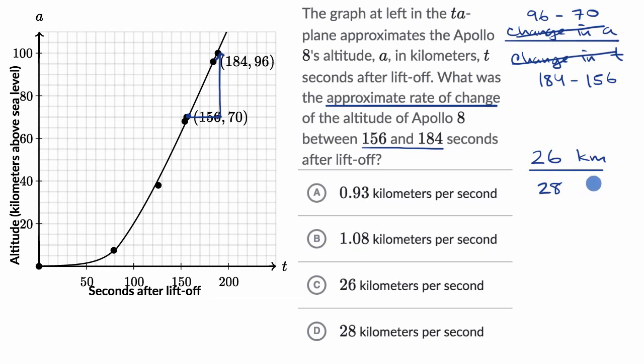Over 28 seconds. Now, we could rewrite this as 26 over 28 kilometers per second. And we could try to calculate this, but this is multiple choice. So we could really try to approximate which of these choices is 26 over 28. Well, we know that this value is going to be a little bit less than one, and so the only choice here that is a little bit less than one is choice A.